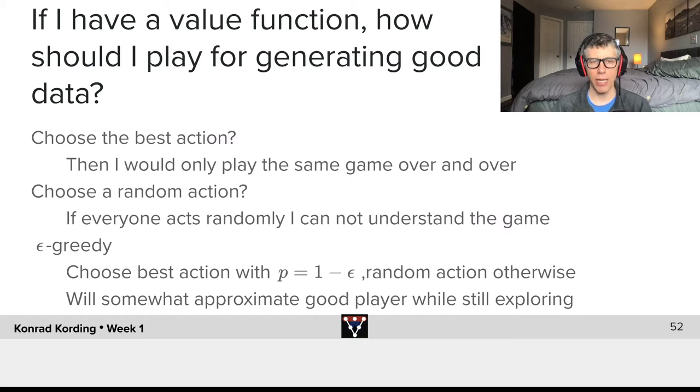One possibility is I could have a system that plays itself and always just chooses the best move. Well in that case we would always play the same game over and over. So this would not produce the diversity of training data that we need for estimating how good a given position is, because just about any position we would never see.